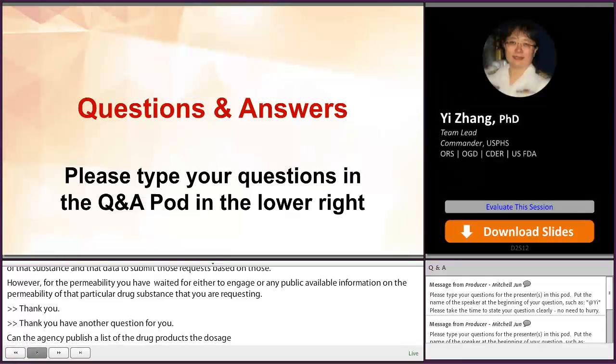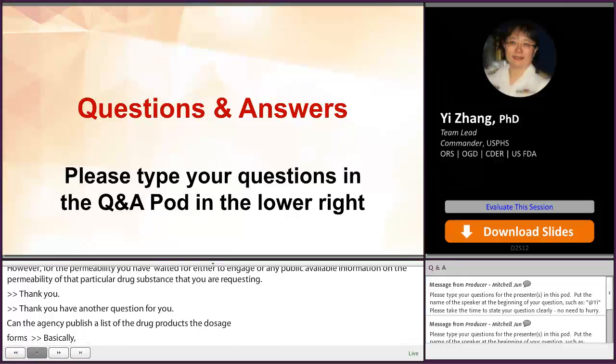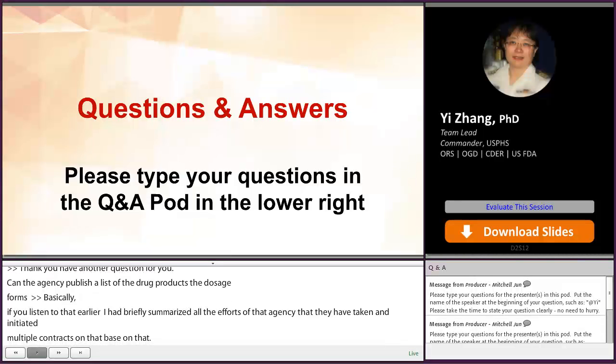Basically, if you listened to my presentation earlier, I have briefly summarized all the efforts that the agency has taken and initiated multiple grant and contract and internal research project on BCS III based waiver. So short answer to this question, does the agency have the intention to publish a list of drug products which are classified as BCS III? At this moment, no.